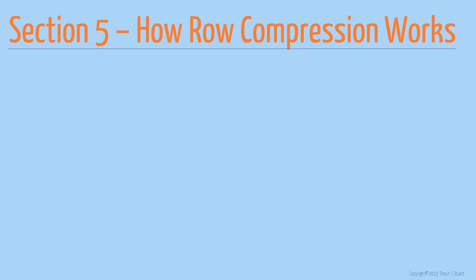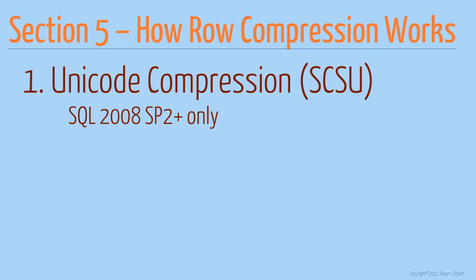Let's look at how row compression works. Row compression, starting in SQL 2008 R2 and later, starts by implementing Unicode compression. The amount of space this saves you depends on what locale or language your SQL Server is using — English, Turkish, Chinese, etc. English usually results in about a 50% savings. Unicode compression works by converting Unicode fields to non-Unicode fields wherever possible.